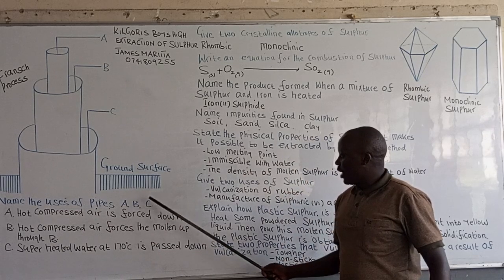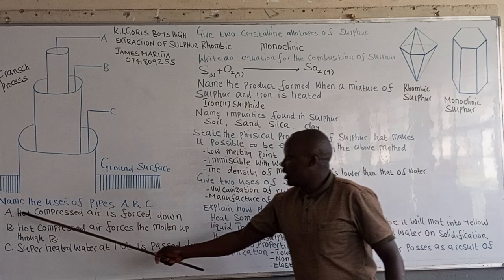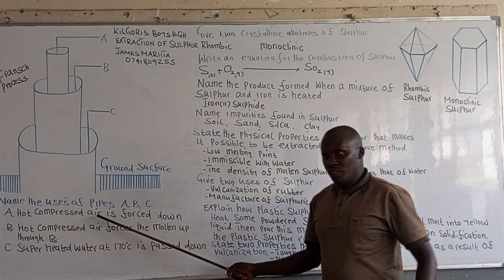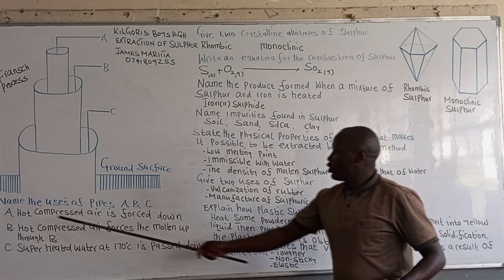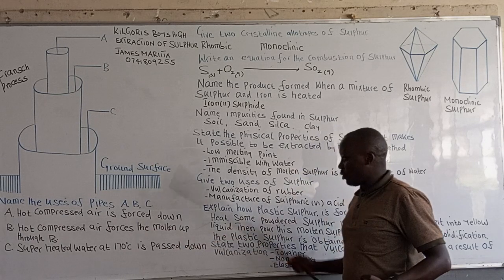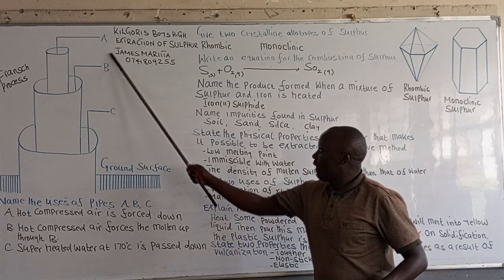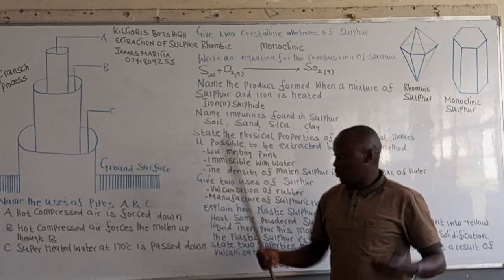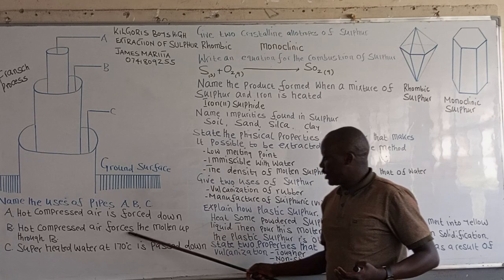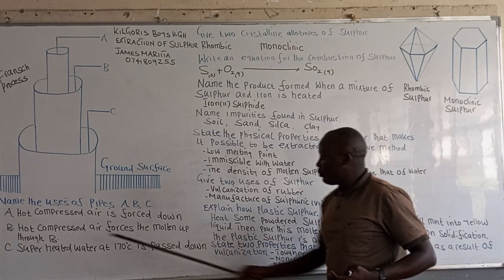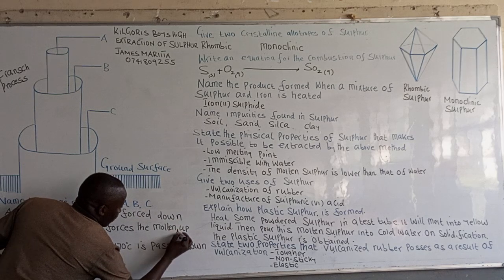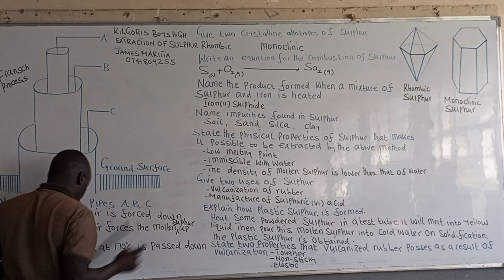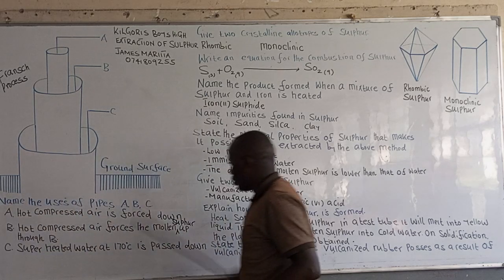Pipe A, B, and C. In pipe A we have low-compressed air, compressed at atmospheric pressure, which is forced down. So pipe A carries low-compressed air that is forced down. Pipe B is the middle pipe — the low-compressed air forces the molten sulfur up through pipe B. Pipe C carries the molten sulfur.